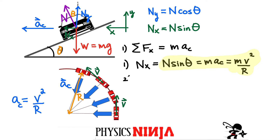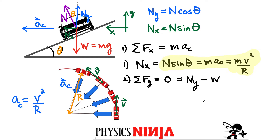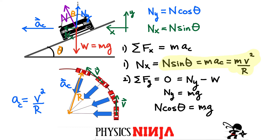Equation 2 is the sum of forces in the vertical direction, which must equal zero — there is no acceleration in the vertical direction. We have two forces: N_y acting up and the weight acting down. Substituting: N_y = mg, and since N_y = N cos(θ), we get N cos(θ) = mg. Let's highlight that expression — this one is also super important.